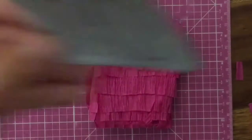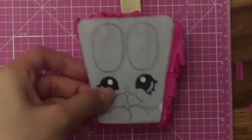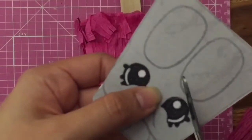Now your Shopkins pinata is ready for its eyes. I'm going to take the same template that I printed out and cut out the eyes and glue them onto the pinata.